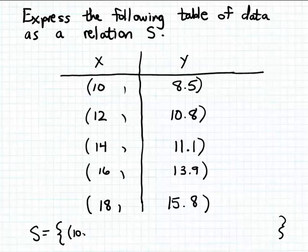The first ordered pair is 10 and 8.5. The second ordered pair is 12 and 10.8, and so forth.